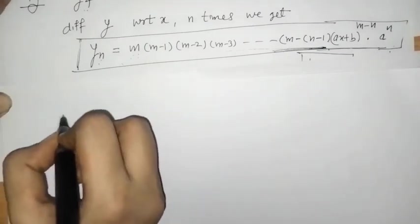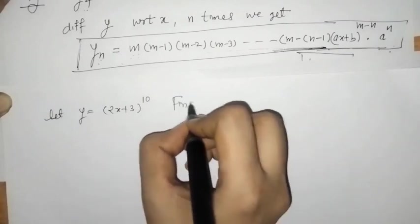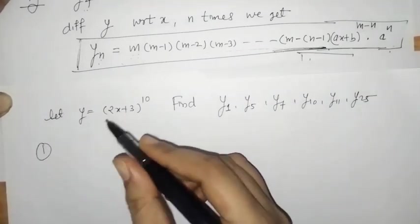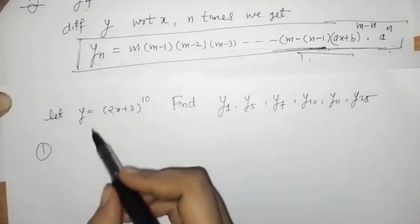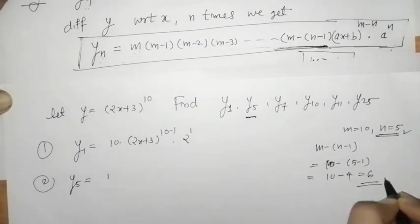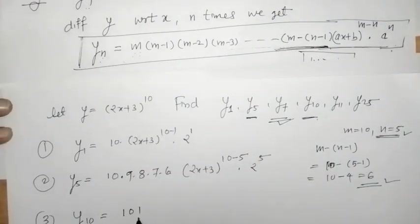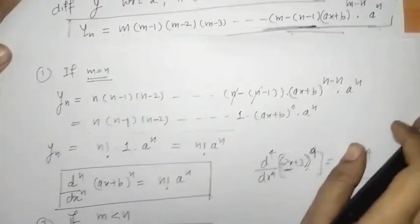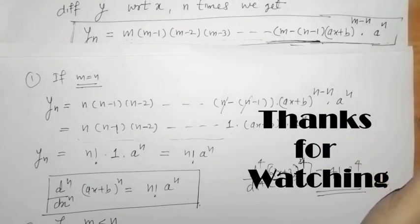To understand all these formulas, consider the example y = (2x + 3)^10. To find y1 we differentiate once; to find y5 we differentiate five times, using all these formulas. That's it for now — see you in the next video. Thank you, keep watching.